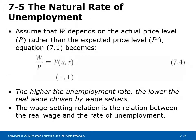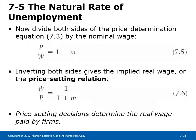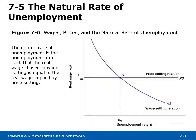Let us look at the implications of wage and price determination on unemployment in the medium run. Assume P = P^E, which holds in the medium run. The real wage implied by the wage-setting relation (equation 7.4) shows that higher unemployment leads to a lower real wage chosen by wage setters. The real wage implied by the price-setting relation (equation 7.6) is W/P = 1/(1 + M), implying a decrease in real wage when the markup increases. Figure 7-6 shows the wage-setting relation, price-setting relation, and the natural rate of unemployment.